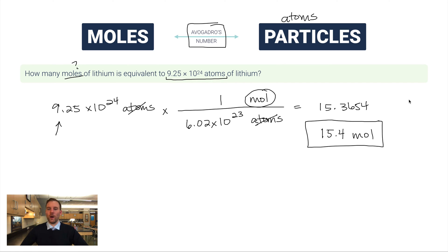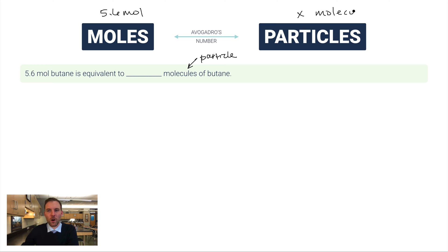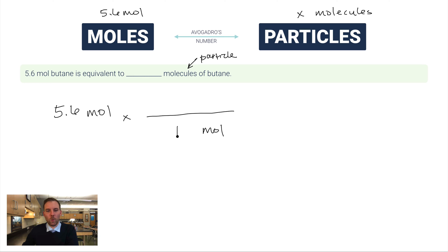Here's another problem: 5.6 moles of butane is equivalent to how many molecules of butane? Molecules is a type of particle, so we have 5.6 moles and we'll convert using Avogadro's number to find how many molecules there are. I start with 5.6 moles, multiply by a fraction with moles underneath, and one mole is equivalent to 6.02×10²³ molecules on top.